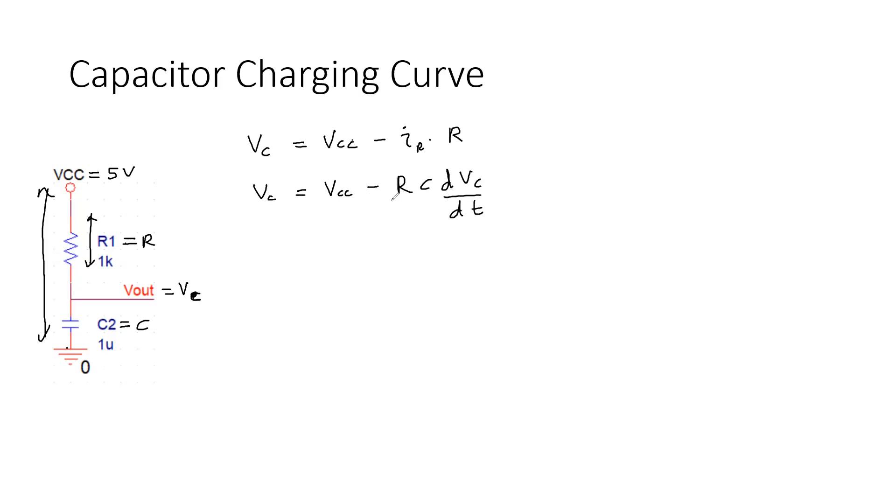Instead of IR, I can write this equation as C times DVC over DT. Then this equation we can slightly rearrange.